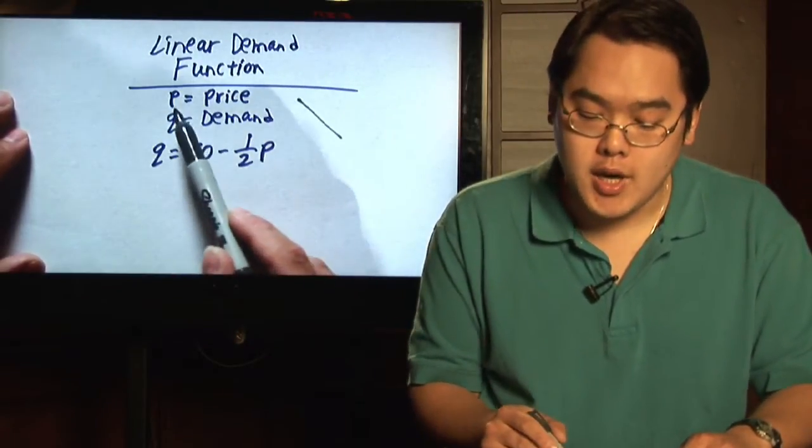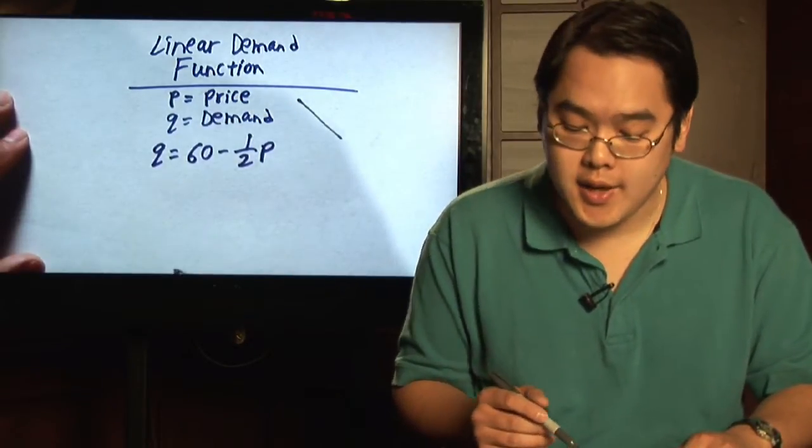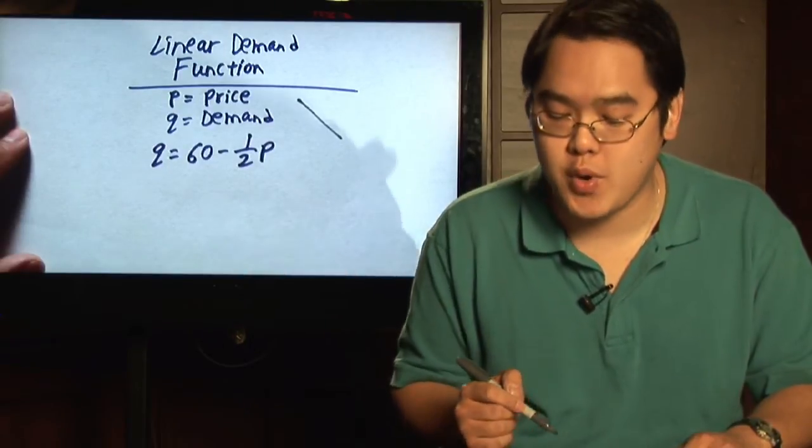Typically, P stands for price and Q stands for demand. And an example that we're going to talk about today is Q equals 60 minus one half P.